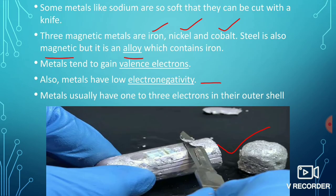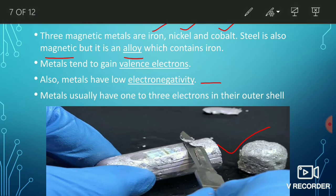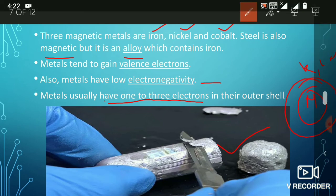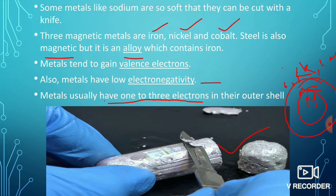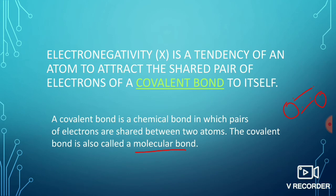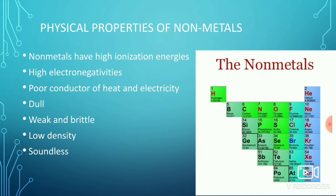The last point about metals is that they usually have one to three electrons in their outer shell — that is, one, two, or three electrons in the outermost shell.